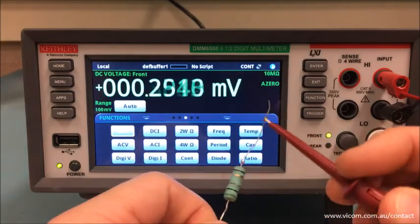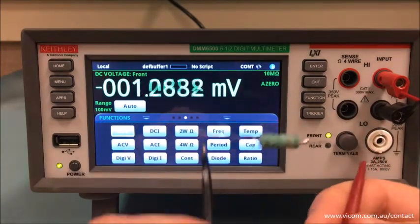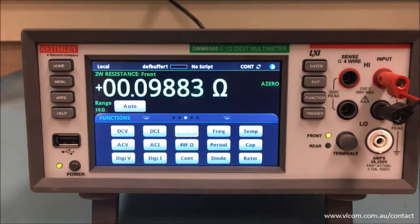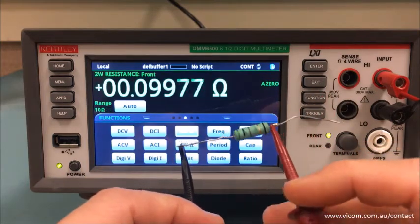Let's connect the device under test and select two-wire resistance. As you can see, I'm measuring just about double what I'm expecting from this particular device. I can change the position of where the leads are connected, but that doesn't make much of a difference.